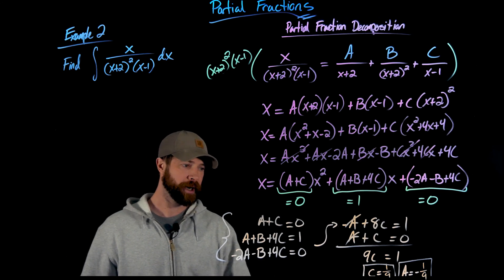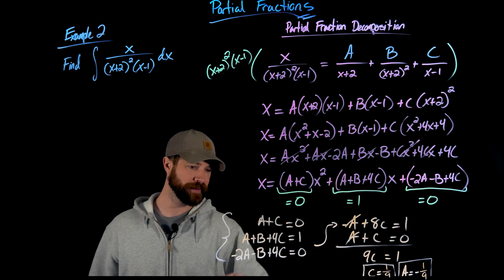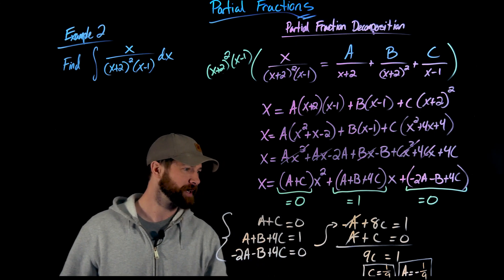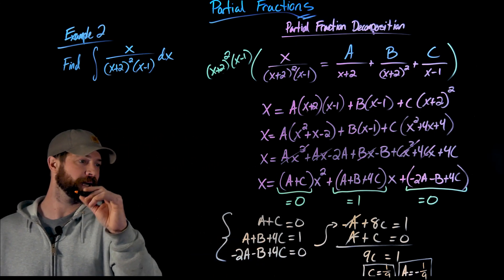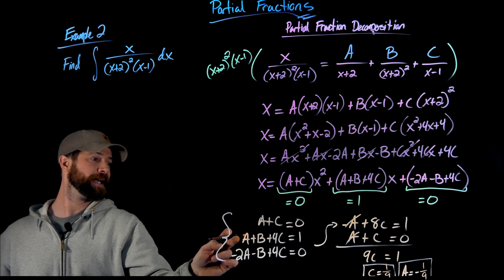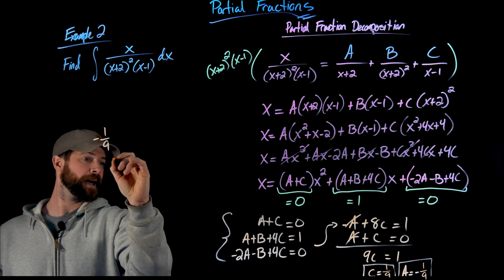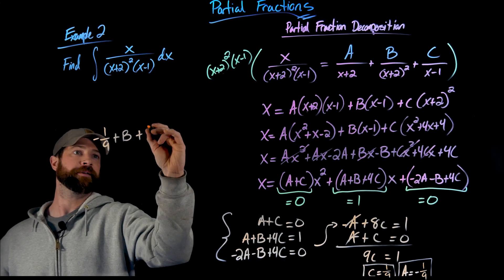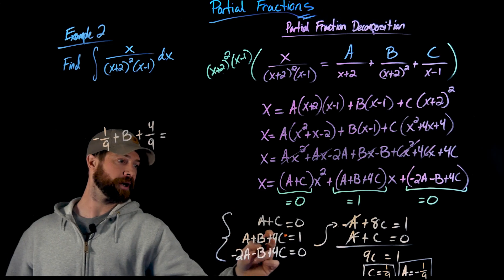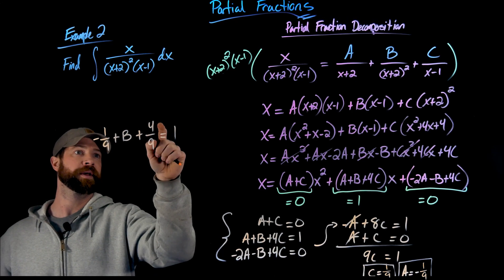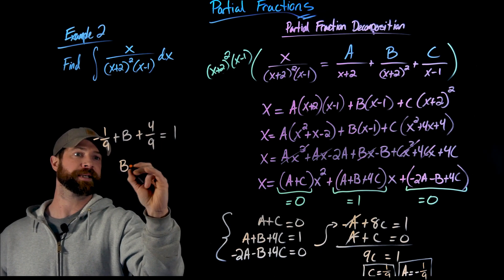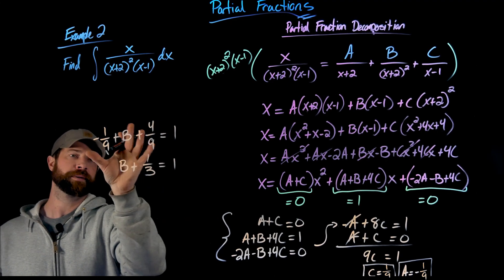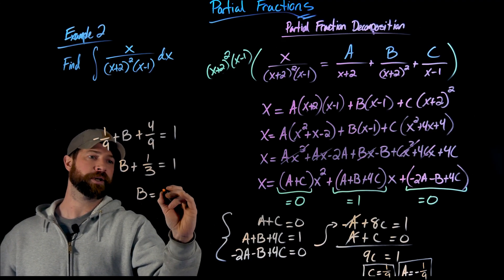But now that I have a and c, all I need to do is plug a and c back into either one of these equations. I'll plug them into this equation right here. It looks a little bit simpler to solve for b. And since I'm kind of running out of room over there, I'll just do that right here real fast. So to find my b value, I have a equals negative 1 ninth. I have my b that I'm going to solve for. And then I have 4 times c. So 4 times 1 ninth. This would be 4 ninths. And this equation all equals 1. And so I have negative 1 ninth, 4 ninths. I'll just put those together to get 3 ninths, which 3 ninths, I'll just write this. I hope this is not too fast for you here, but that's just one third. So 3 ninths, one third, subtract over one third to get that b equals two thirds.